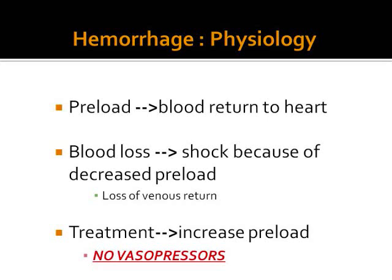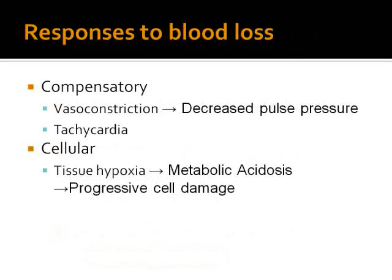In cases where blood volume is lost, we cannot use vasopressors — they are ineffective — and what we need to do is to increase the preload by volume replacement. The body responds to blood loss by vasoconstriction and tachycardia, and at the cellular level there is tissue hypoxia, which leads to metabolic acidosis. If this persists for long, it will lead to progressive cell damage.